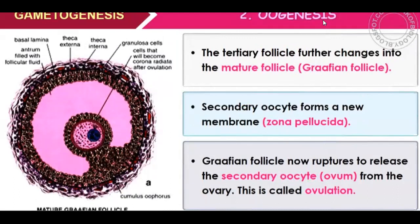The tertiary follicle further changes into the mature follicle, that is the Graafian follicle. The secondary oocyte has nutrient-rich cytoplasm. Under the secondary oocyte, a new membrane forms — the zona pellucida.